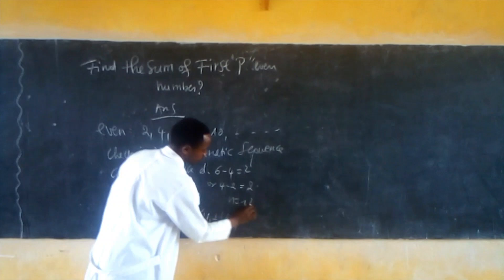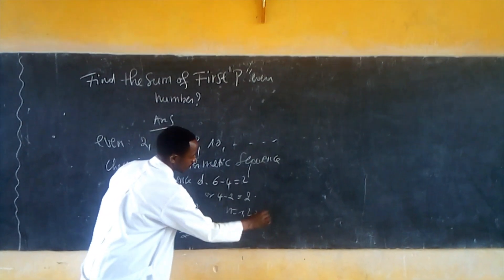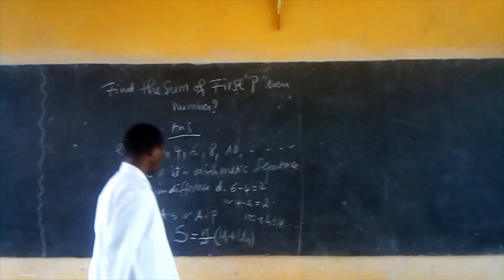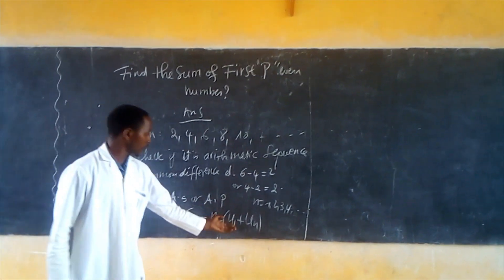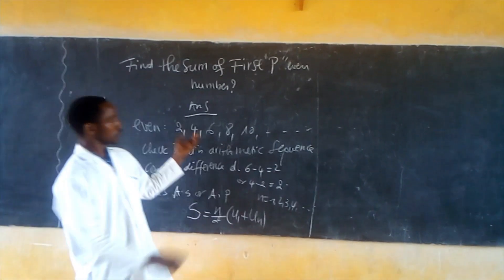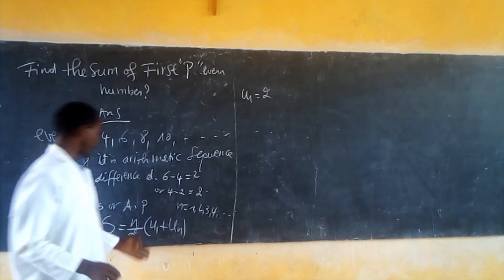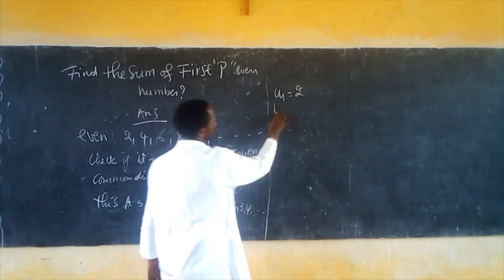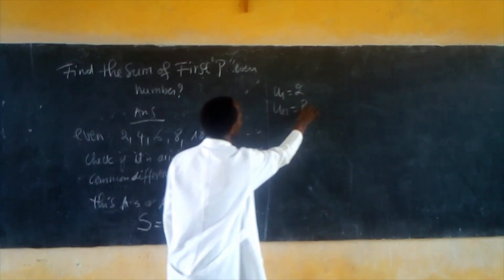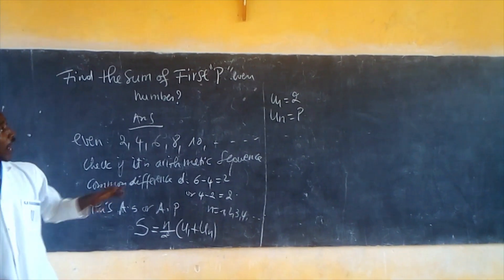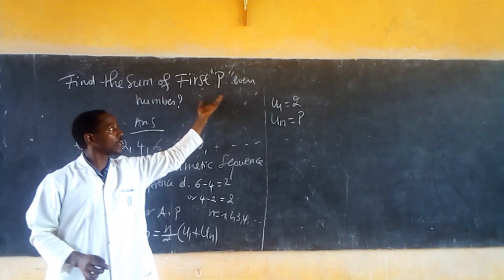We begin with 1, 2, 3, 4, and so forth. U1 is equal to 2. We need to find Un. We don't know the finite number of terms, so we call it P.